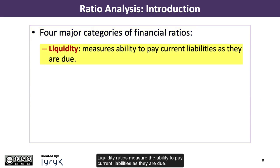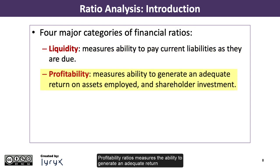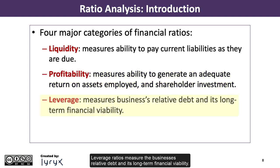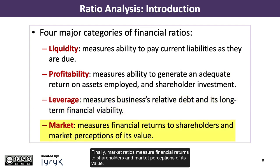Liquidity ratios measure the ability to pay current liabilities as they are due. Profitability ratios measure the ability to generate an adequate return on assets employed and shareholder investment. Leverage ratios measure the business's relative debt and its long-term financial viability. Finally, market ratios measure financial returns to shareholders and market perceptions of its value. Each of these categories and their respective ratios are covered in separate videos, starting with liquidity.